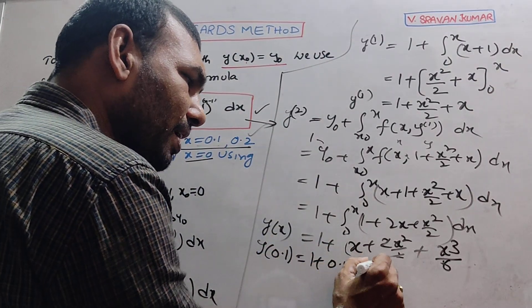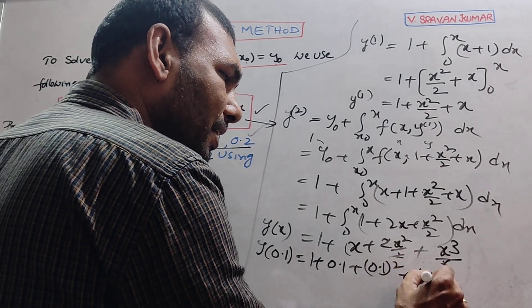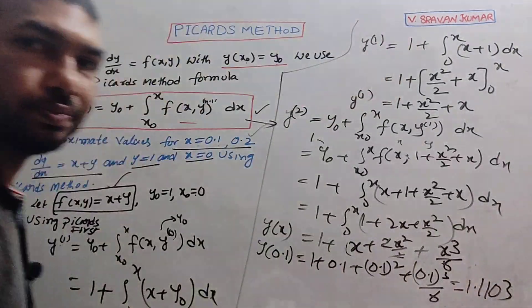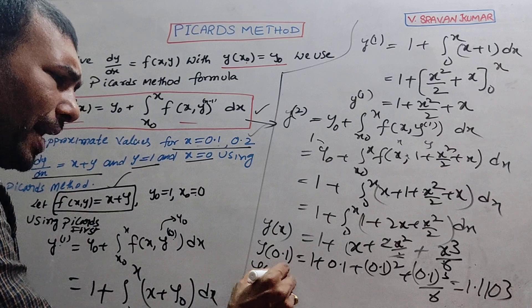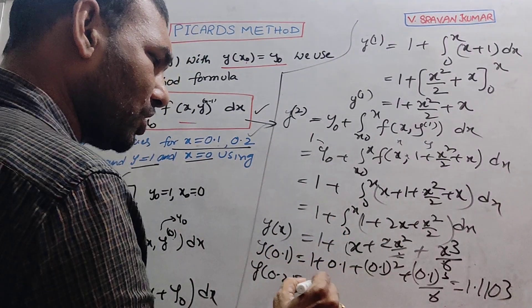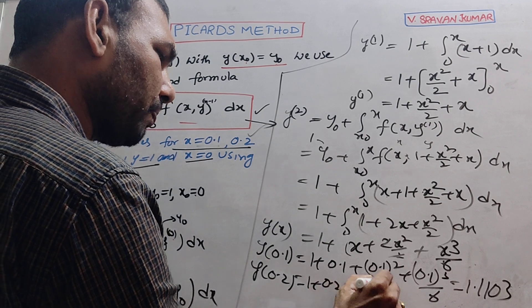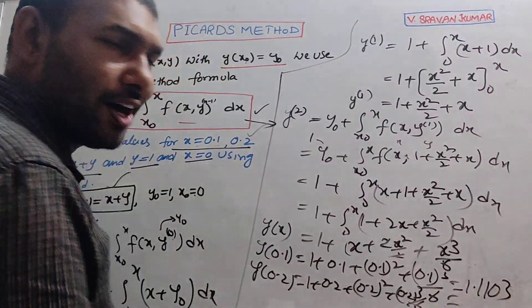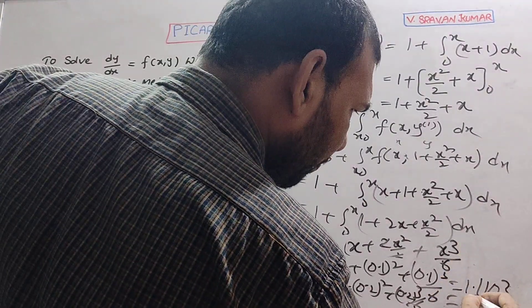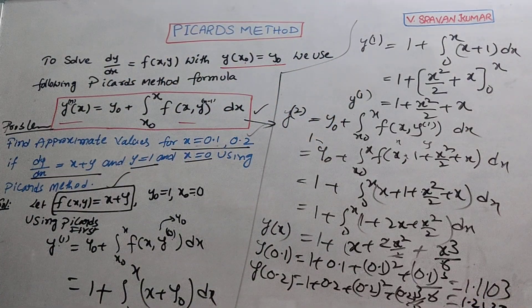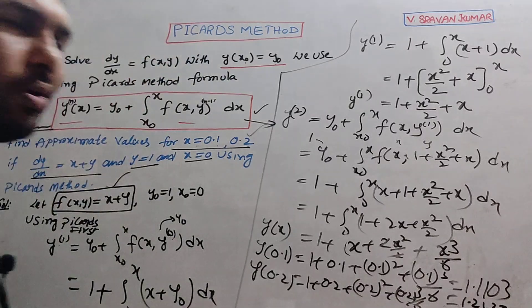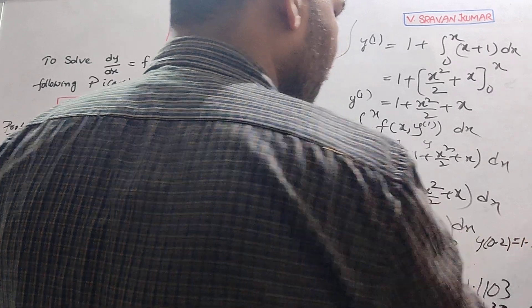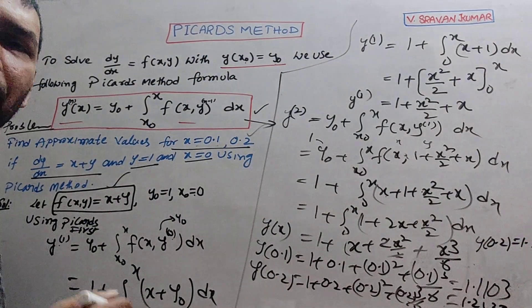I am treating this one as y(x). So y(0.1) - substitute x = 0.1 into y(x): 1 + 0.1 + (0.1)²/2 + (0.1)³/6, you will get y(0.1) = 1.1103. Now if y(0.2), substitute x = 0.2: 1 + 0.2 + (0.2)² + (0.2)³/6, you get y(0.2) = 1.2427.